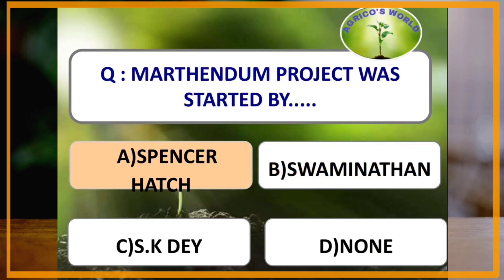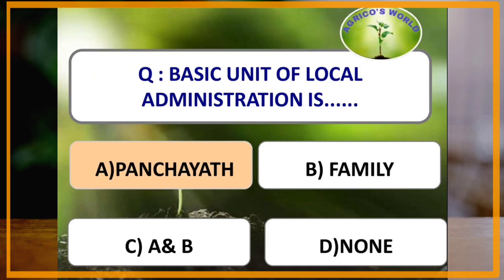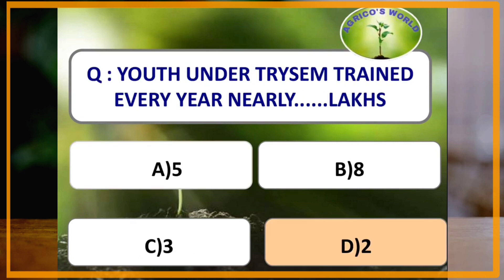Marthandam Project was started by Spencer Hatch. The state which was electrified rurally is Haryana in the year 1921. Basic unit of local administration is Gram Panchayat. Youth trained under TRYSEM comes nearly to how many lakhs? The answer is 2 lakhs.